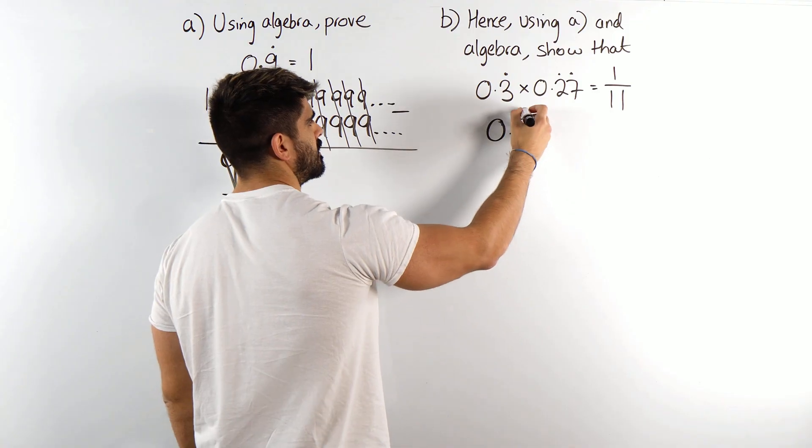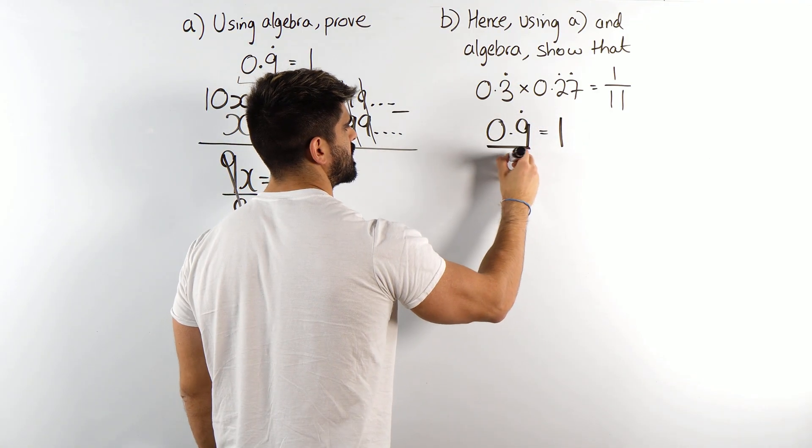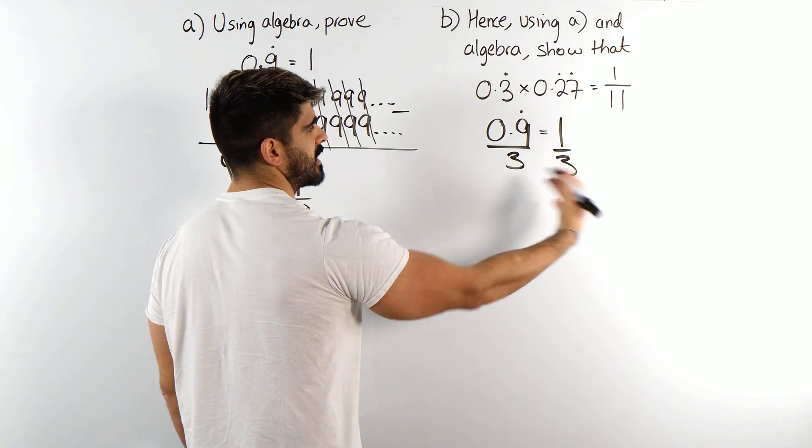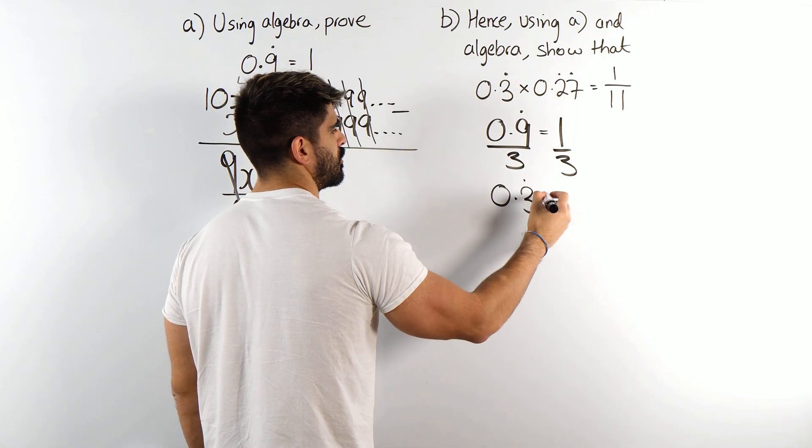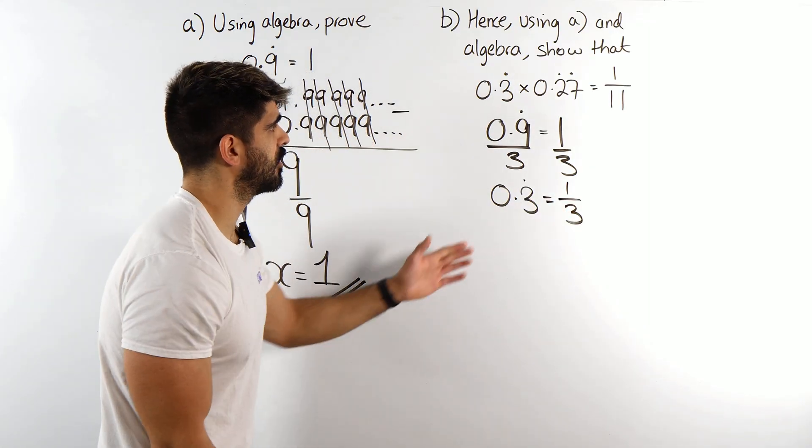Now, if 0.9 recurring is 1, then if I divide both sides by 3, that would just give me 0.3 recurring. 0.3 recurring is 1 third. Okay, so we've got that bit.